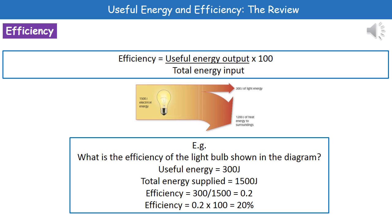For the example shown — what's the efficiency of the light bulb? The useful energy is the light energy, which is 300 joules, and we've got 1,500 joules of total energy supplied. So we do useful divided by total: 300 divided by 1,500, then times by 100. That gives us 0.2 times 100, which is 20% efficiency.